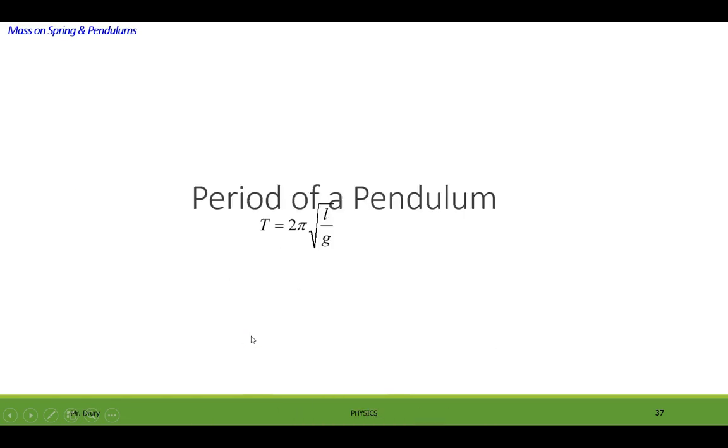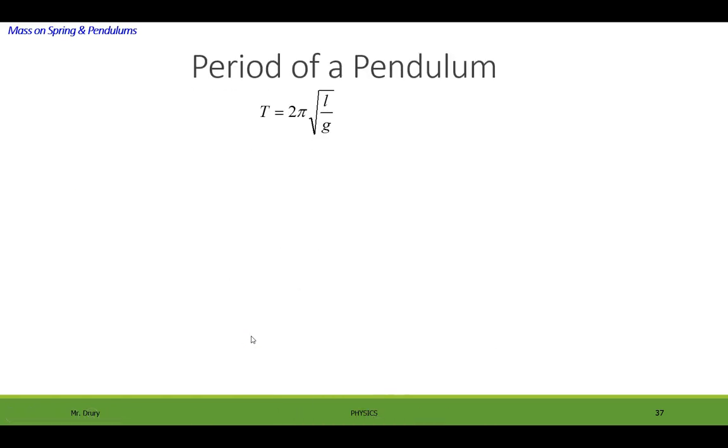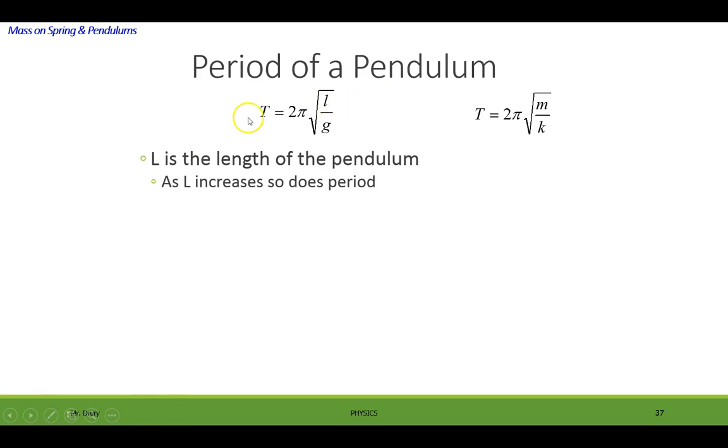All right. So let's look at the equation for the period of a pendulum. Period is equal to 2 pi radical L over G, where L is the length of the pendulum and G is the gravitational constant. And I just want to draw some analogies to the equation for a mass on a spring. You can see that they're very similar because they were really derived the same way. So anyhow, L is the length of the pendulum, as I said. And as L increases, so does the period. So the longer the pendulum is, the period will increase.